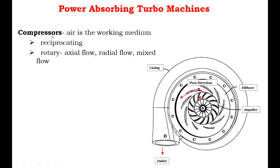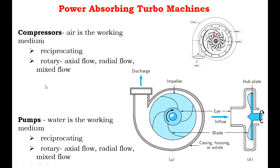The next type is the compressor, in which air is the working medium. There are two types of compressors: reciprocating and rotary. The rotary type is further classified into axial flow, radial flow, and mixed flow. The next power-absorbing type is the pump, where water is the working medium. Pumps are classified into reciprocating and rotary types; the rotary type is further classified into axial flow, radial flow, and mixed flow based on the direction of the fluid.